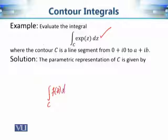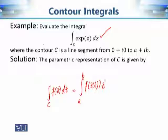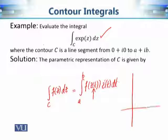Let me write down the definition: the contour integral equals the integral of f(z(t)) · z'(t) dt. This tells us that the first step is to find the parameterization of contour C. Our contour is a line segment with initial point at the origin and final point at a + ib.